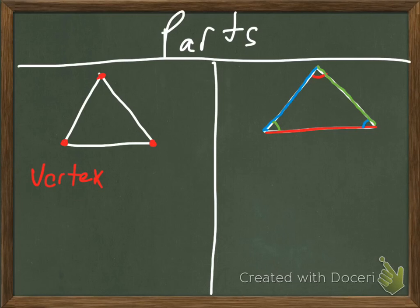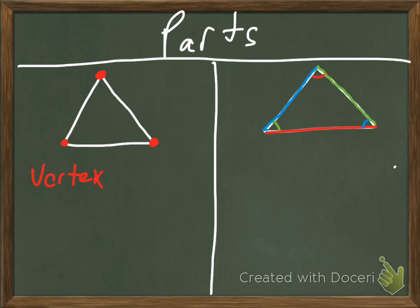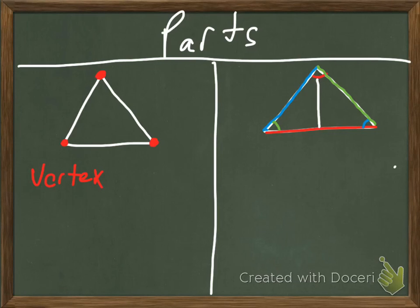Last, we're going to talk about the parts of a triangle. The vertex is all of the points where two sides meet — these are the vertices of your triangle. On this colorful triangle, we'll talk about sides and opposites. The side across from an angle is called its opposite side, and the angle across from a side is the opposite angle. So the red angle's opposite side is the red side, the blue angle's opposite is the blue side, and the green angle's opposite is the green side.